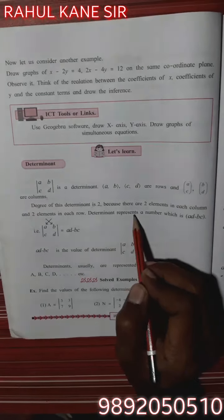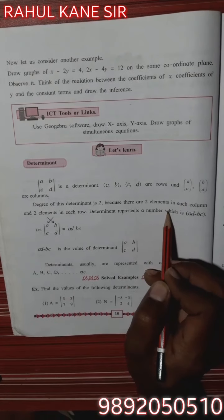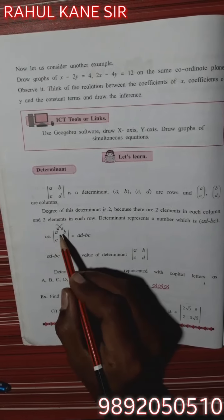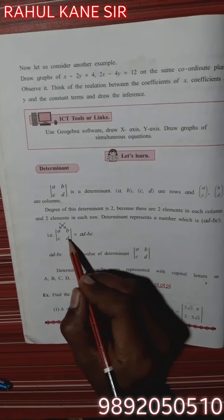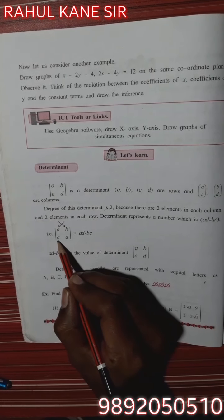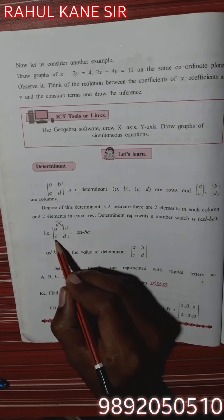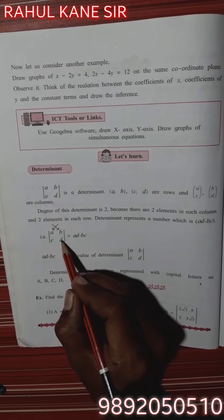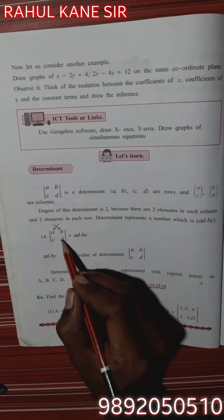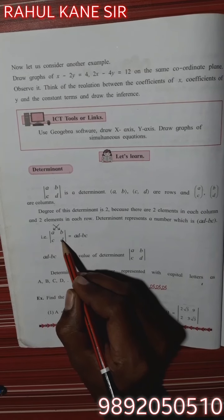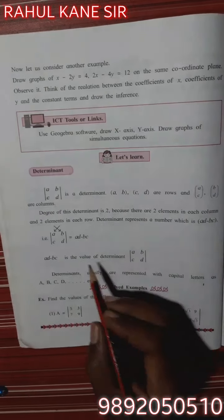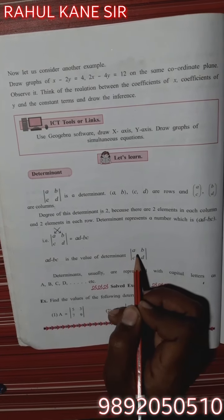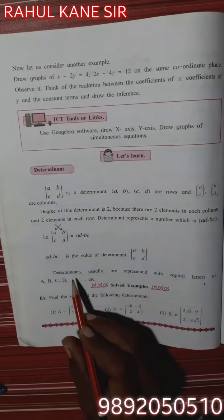A determinant represents a number which is A·D minus B·C. A·D minus B·C means we can say that cross multiplication between elements and subtraction. So A·D minus B·C is the value of the determinant.